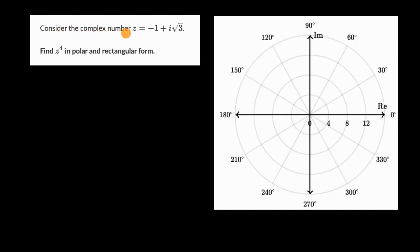We're told to consider the complex number z equal to negative one plus i times the square root of three, and find z to the fourth in polar and rectangular form. Pause this video and see if you can figure that out. Now let's work through this together.